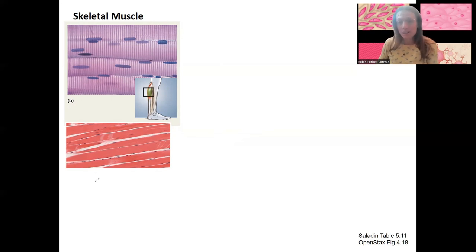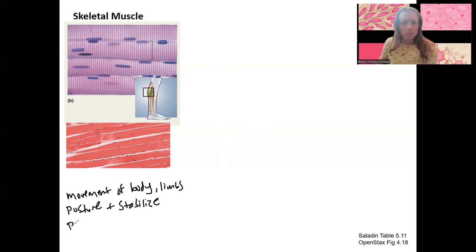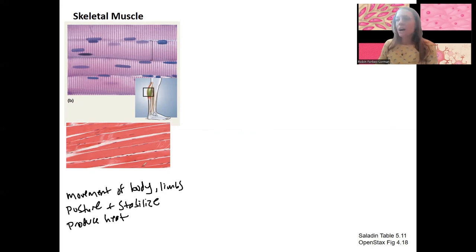The byproduct of ATP breakdown is heat, so it keeps us warm — shivering is done by skeletal muscles. Movement of the whole body is a big one, including limbs, posture, and stabilizing joints during activity, along with ligaments. Muscles also produce heat. Here's an example of the gastrocnemius, which attaches to the bone via tendons — you saw connective tissue. Skeletal muscle is striated.